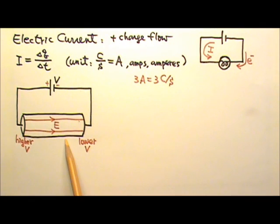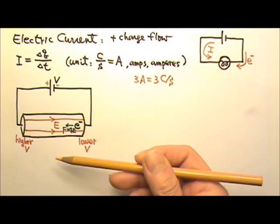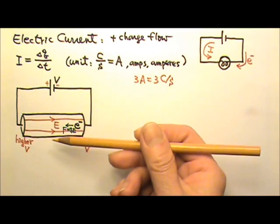We learned that the electric field is zero everywhere inside a conductor in a static situation. But this is not a static situation. Charges are flowing, so there is no contradiction. Inside the metal wire, there are free electrons. Those negatively charged electrons in an electric field would experience electric force F equals to QE to the left, opposite to the direction of the electric field. So the free electrons would get pushed and flow to the left.